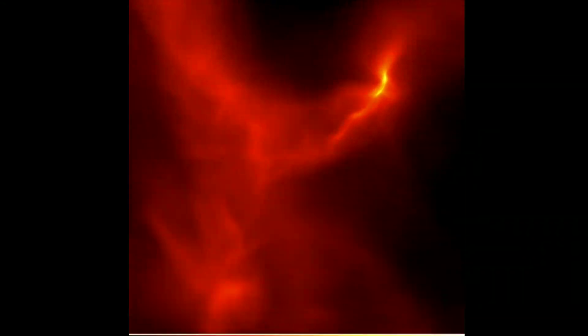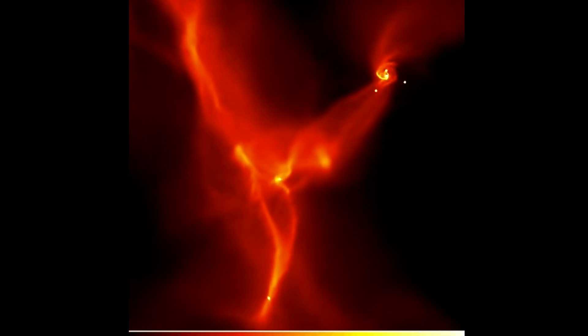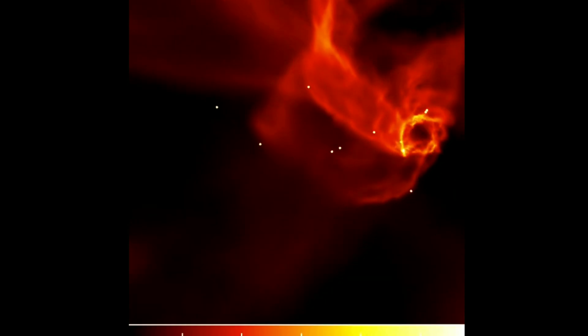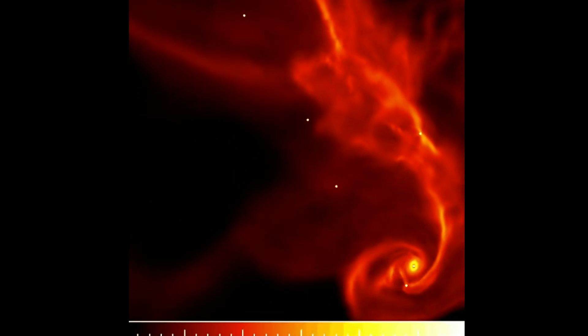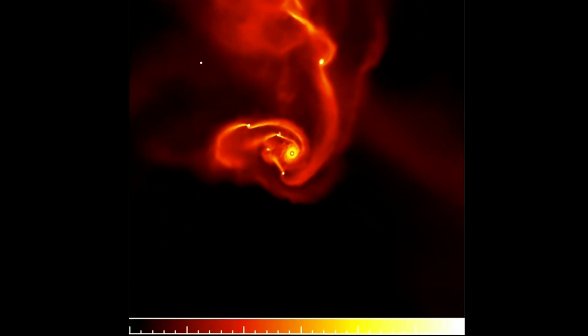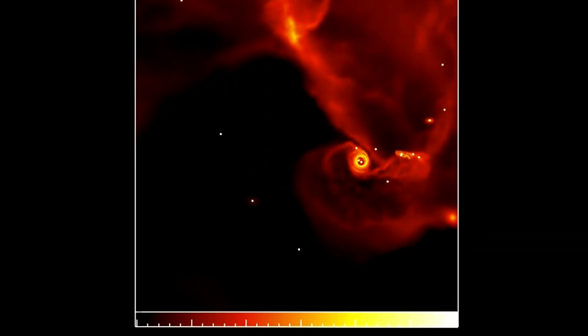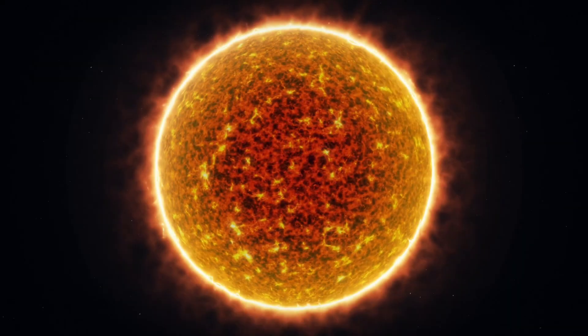A protostar looks like a star but its core is not yet hot enough for fusion to take place. The luminosity comes exclusively from the heating of the protostar as it contracts. Protostars are usually surrounded by dust, which blocks the light that they emit, so they are difficult to observe in the visible spectrum.